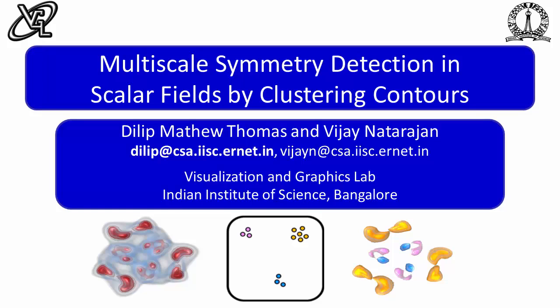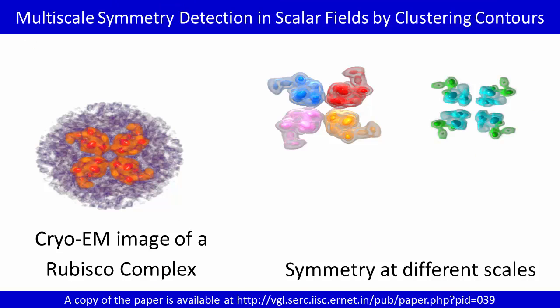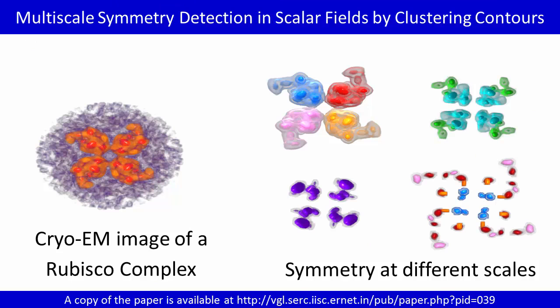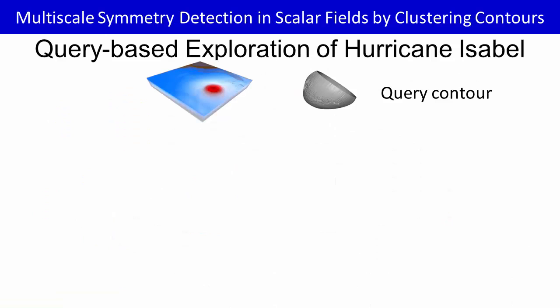We propose a clustering based method to detect symmetry in scalar fields at multiple scales. The method is based on a novel representation of contours in the scalar field. Each contour is mapped to a point in a high dimensional transformation invariant shape descriptor space. Symmetry is identified by clustering the points in this space.